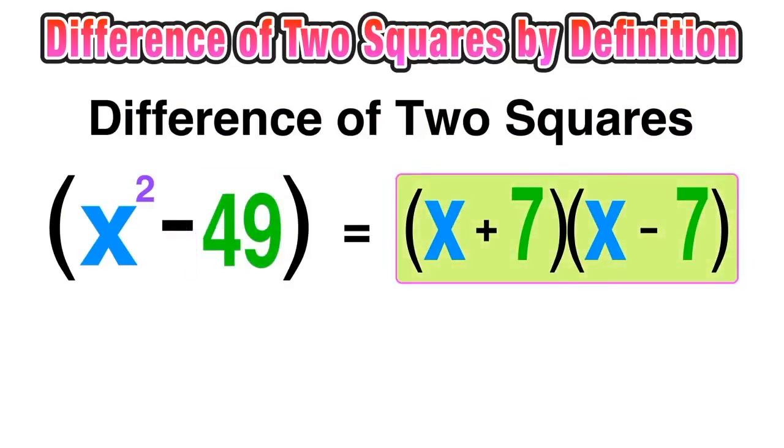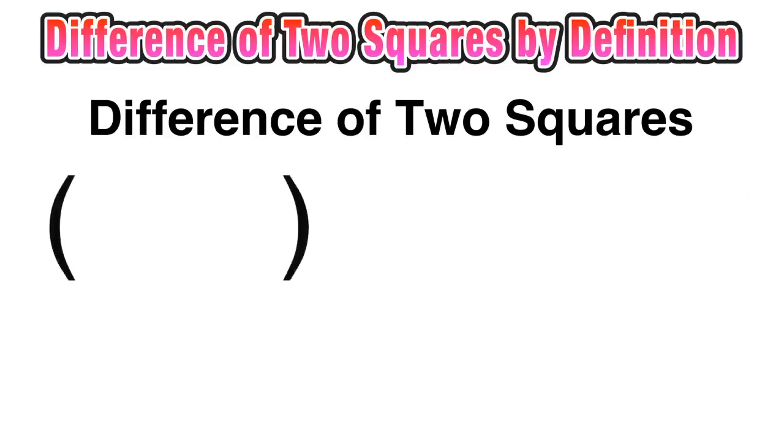And now our factors are x plus 7, x minus 7, and we're done. Here's another example: let's factor 9y to the fourth minus 100.